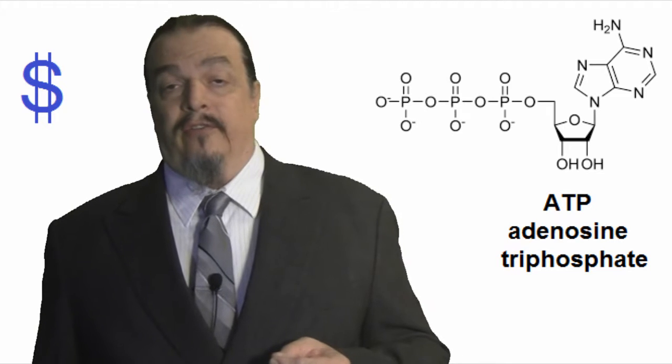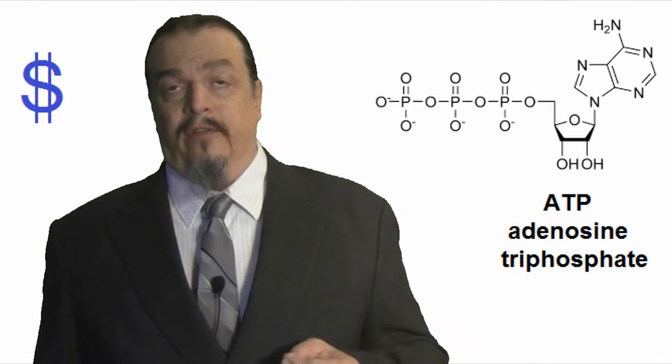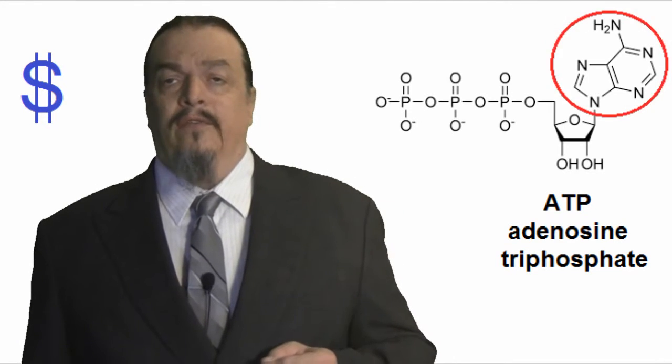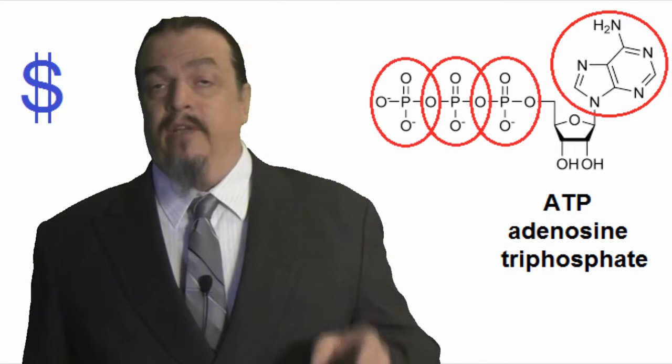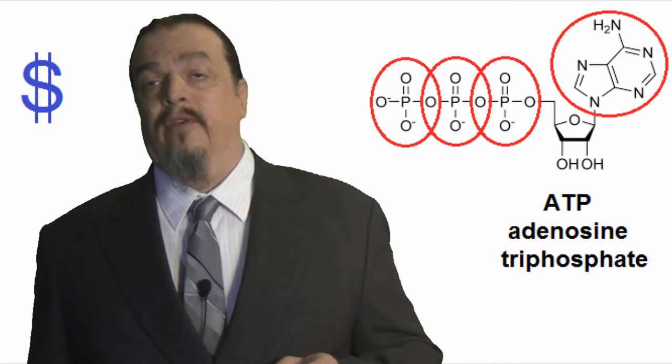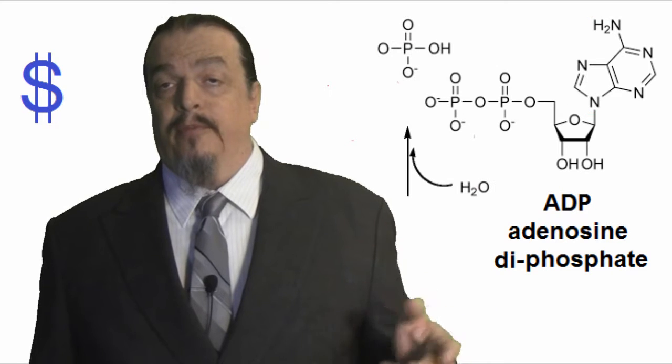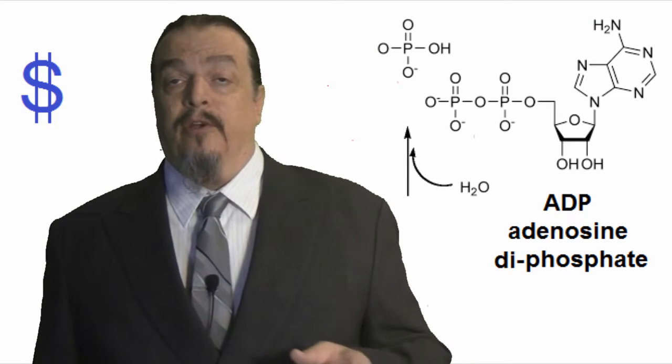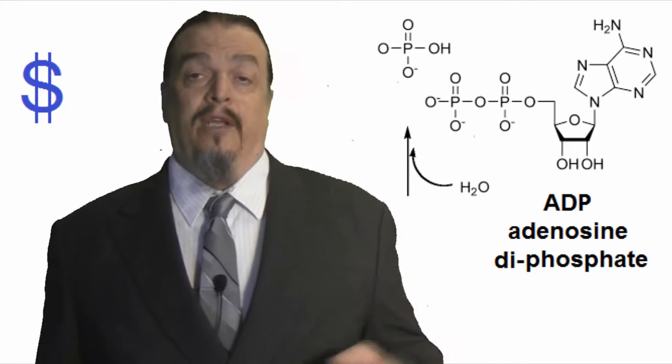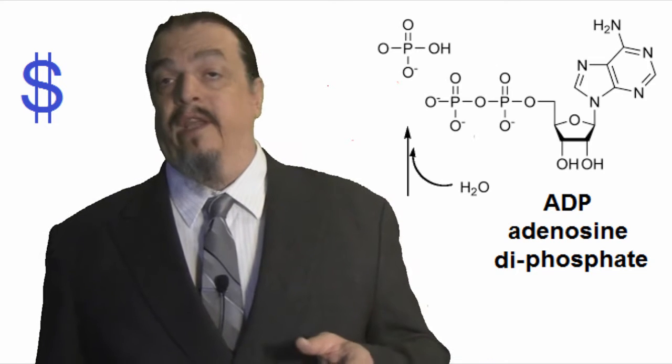You can see why it's called adenosine triphosphate if you look at the model of its molecular structure. Adenine forms the base of the molecule, which has three, hence triphosphates attached to it. Water helps break the bonds between the phosphate groups and the molecule. This process is called hydrolysis. Hydro meaning water and lysis refers to breaking things.